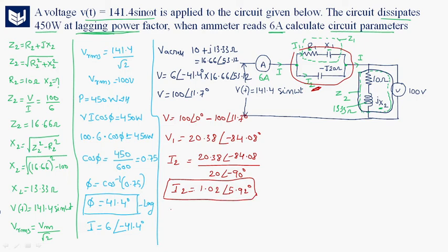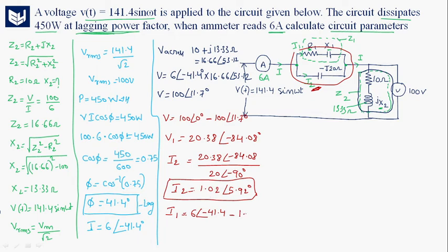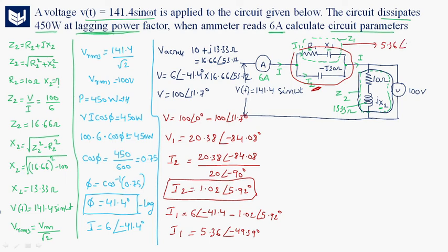The current through the R1 + jX1 branch is I1 = I − I2 = 6∠−41.4° − 1.02∠5.92°. Solving this, I1 = 5.36∠−49.39 degrees. This is the current flowing through the R1 + jX1 branch.